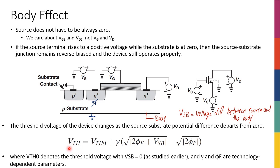It turns out that if V_SB has any finite value, my threshold voltage increases. The equation governing this behavior includes technology-dependent parameters phi_f and gamma, which you'll learn about in more advanced courses. The expression tells us that the threshold voltage equals a base VTH0 plus a function of V_SB. If V_SB is zero, the extra term vanishes and you get VTH0. But if V_SB has any finite value, VTH increases — for example, from 0.5V to perhaps 0.55V or 0.6V.